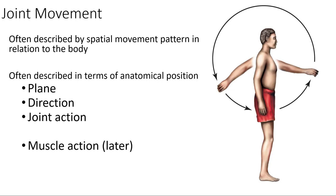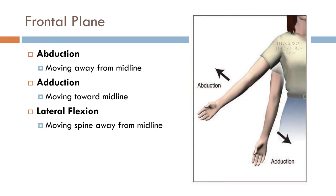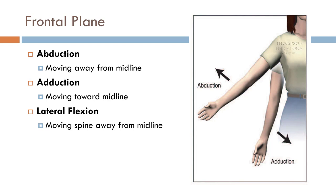In the sagittal plane we have flexion — a decrease in angle between two segments — and extension, an increase in angle. In the frontal plane, abduction is moving away from midline and adduction is moving toward midline. For the spine, since it is considered midline, we use lateral flexion instead. In the transverse plane, internal rotation (also called medial rotation) moves toward midline, while external rotation (lateral rotation) turns away from midline. In the trunk, you're either rotating left or right.